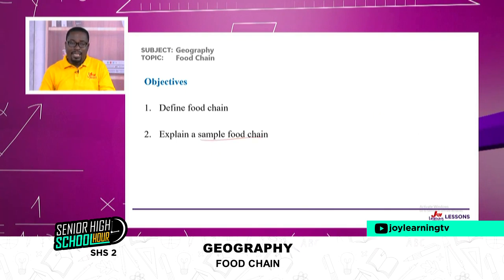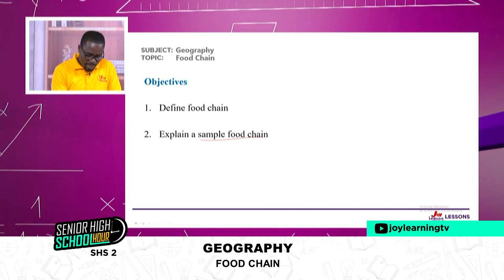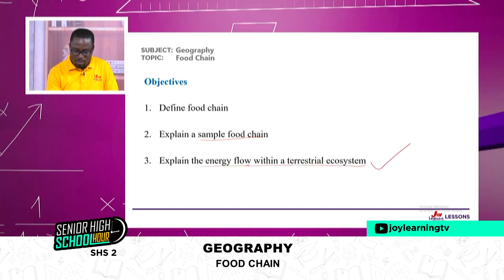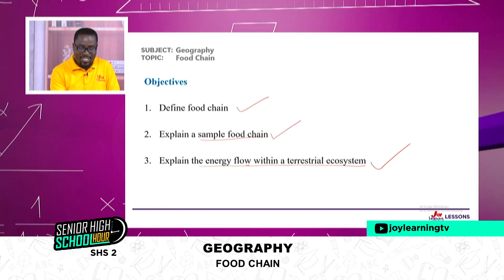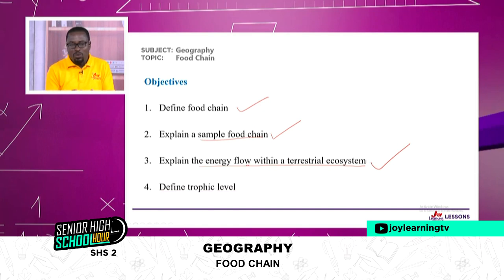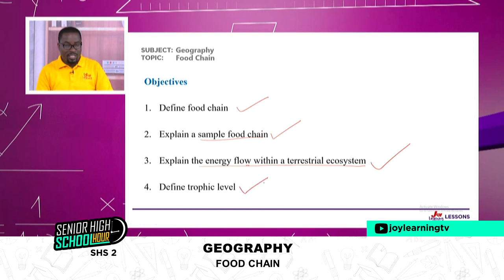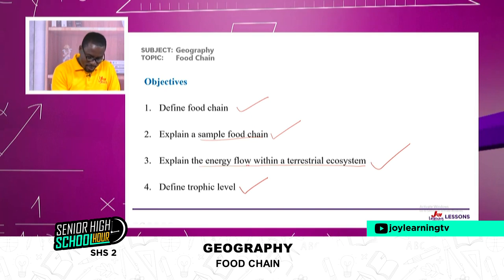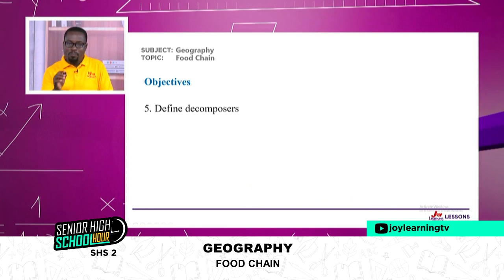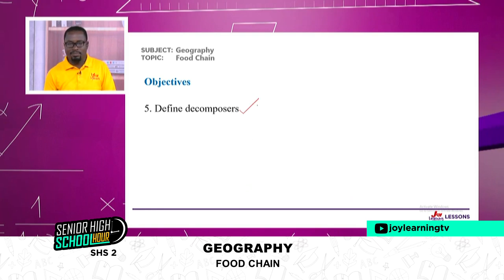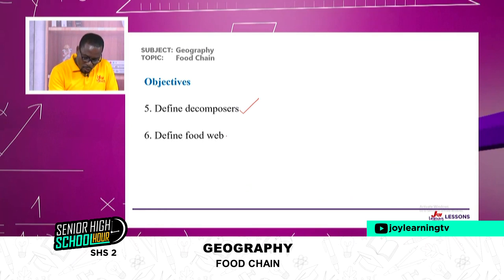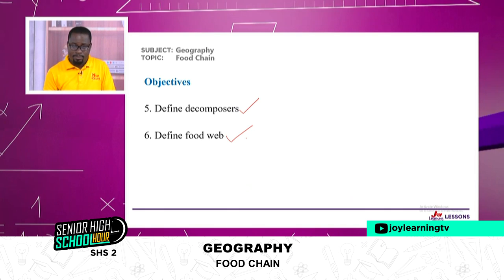Then also, explain the energy flow within a terrestrial ecosystem. The fourth one: define what we call trophic level. What is a trophic level? Objective number five: you should be able to define decomposers. Then also define what a food web is.